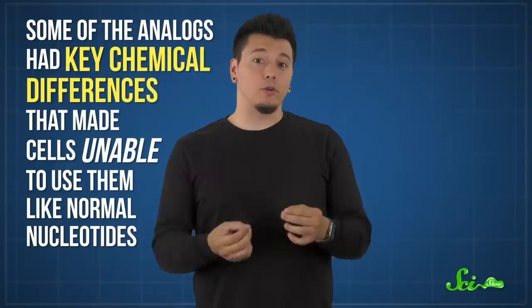Some of the analogs had key chemical differences that made cells unable to use them like normal nucleotides. They were a biochemical dead end, and they would gum up the works, essentially blocking a cell's ability to make DNA or RNA. Which is exactly what Elion and Hitchings were looking for in a drug. But they had to make sure it wasn't too toxic to people.